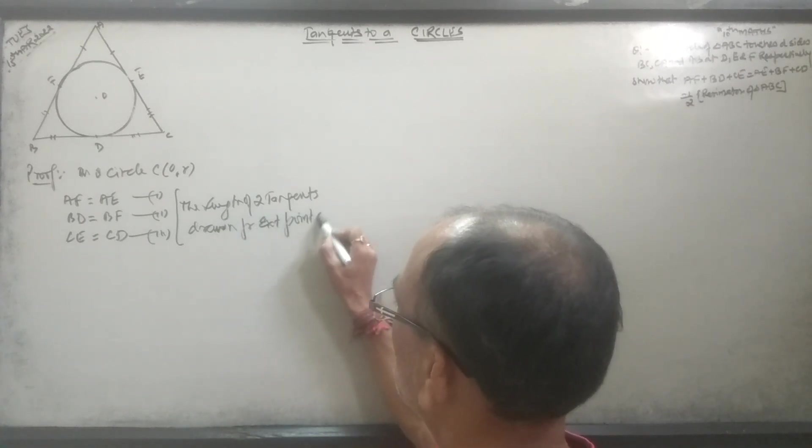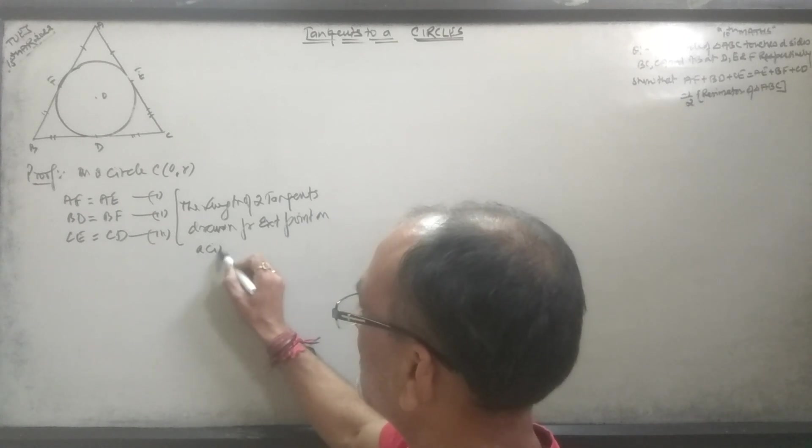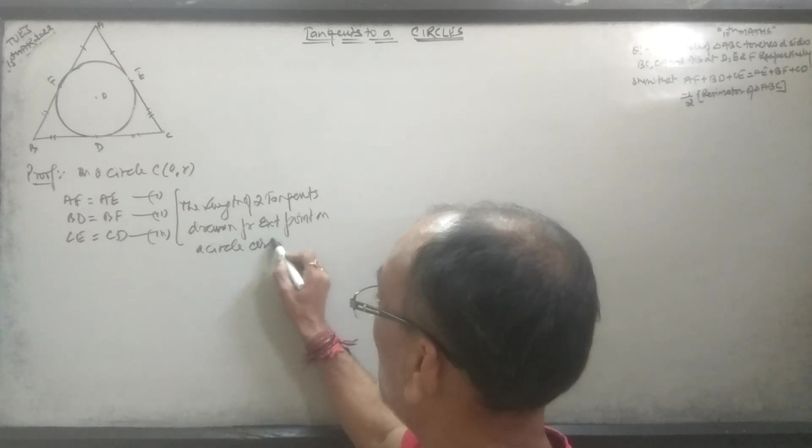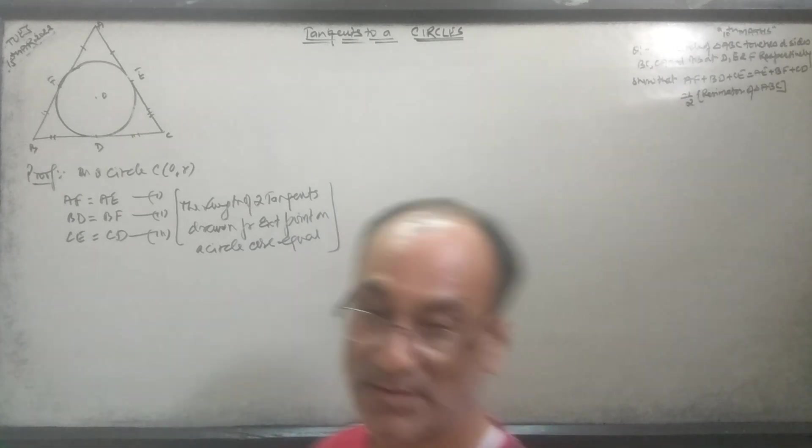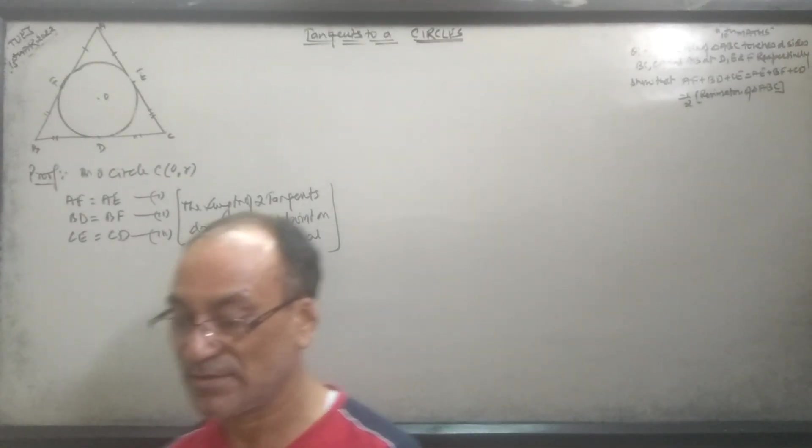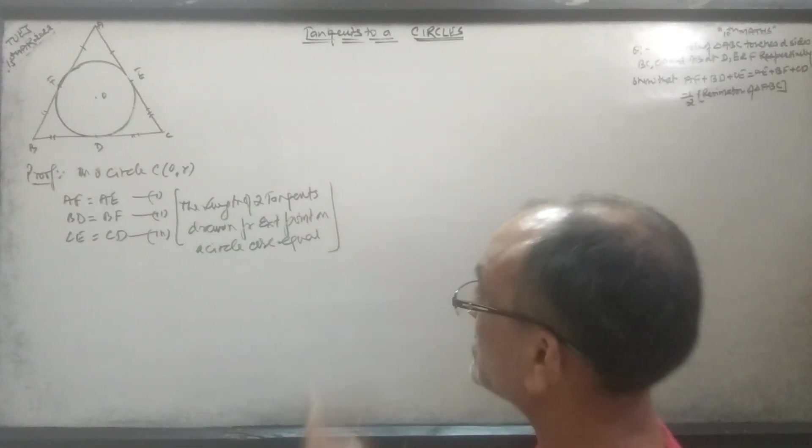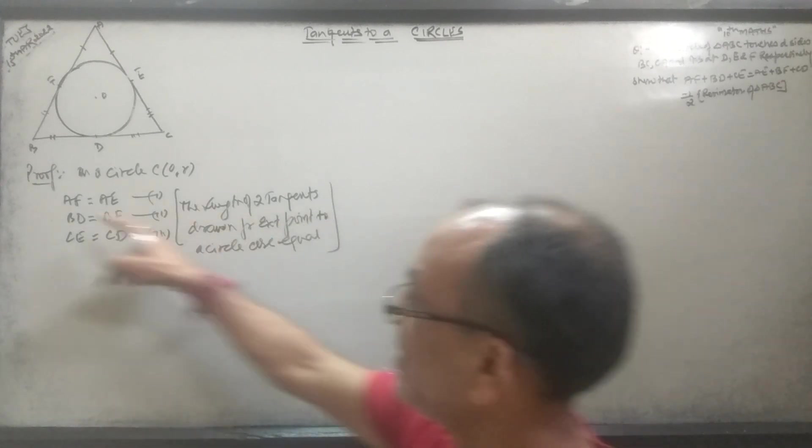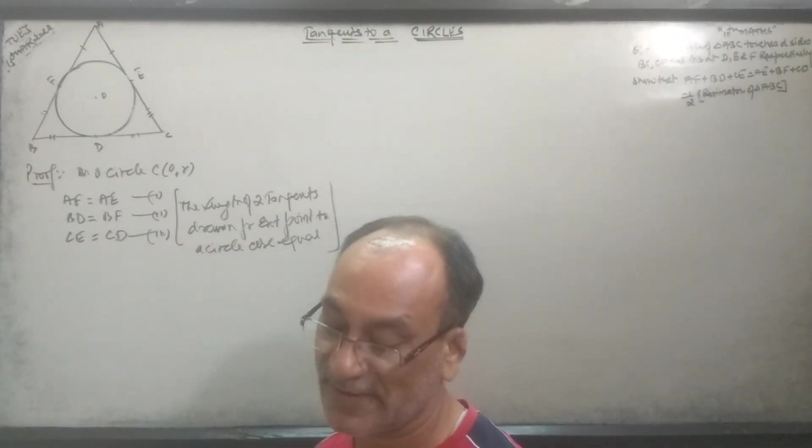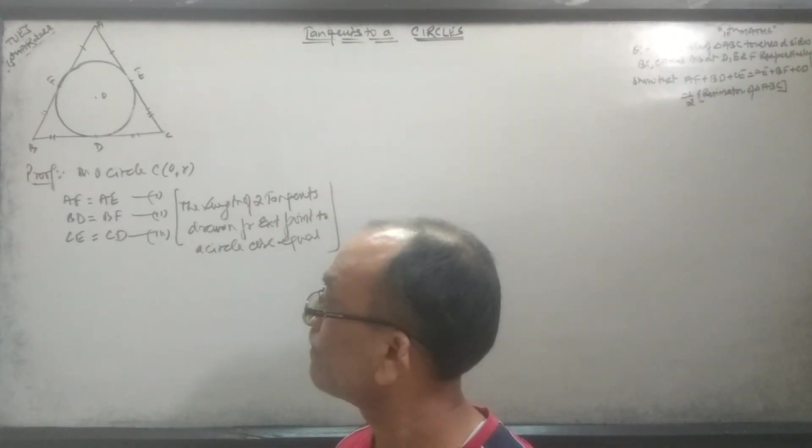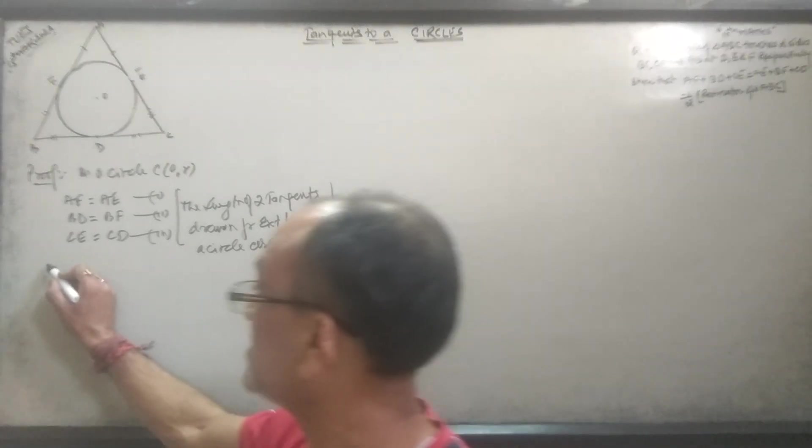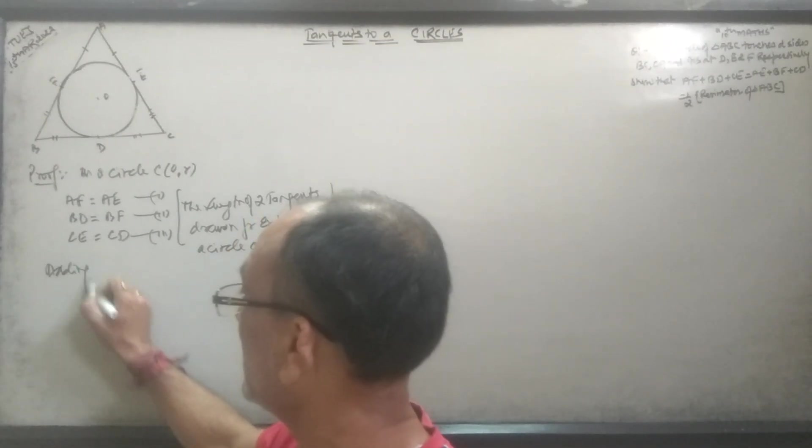I'll write again. Adding equations number one, two, and three on both sides, we get AE plus BF plus CD equals AF plus BD plus CE.